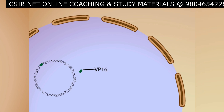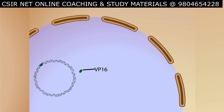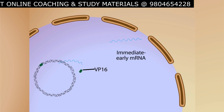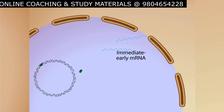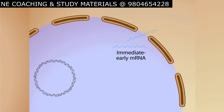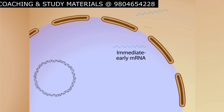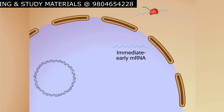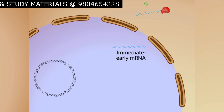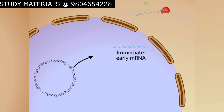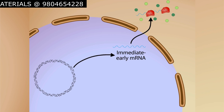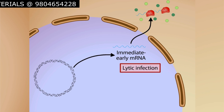VP16 works in concert with host factors to activate a set of viral genes called immediate early genes. These immediate early mRNAs leave the nucleus for the cytoplasm, where ribosomes translate them into proteins.